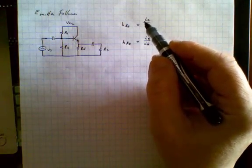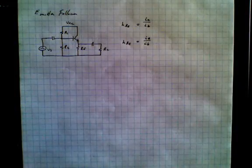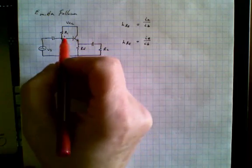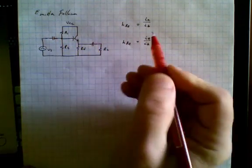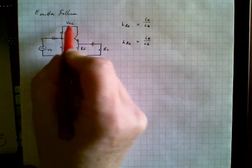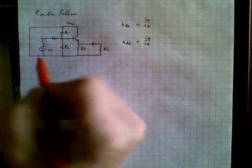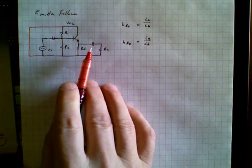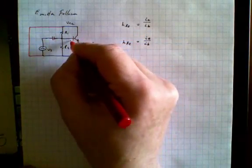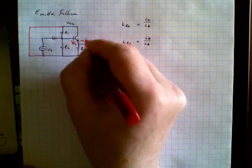The first thing we want to do is redraw this circuit as the AC equivalent. Remember what happens when we do that: we automatically short-circuit all the capacitors, so this becomes a short and this becomes a short. Then the supply voltage also goes to zero, so that essentially becomes a short as well. We also have to include the AC impedance which is intrinsically found within the base-emitter junction, which is Re prime.